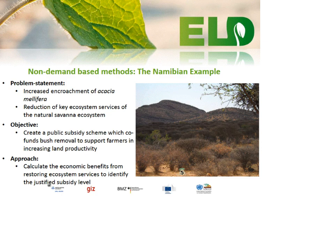The objective was to create a subsidized scheme, funded by the public sector, to support farmers in restoring ecosystem services — specifically cutting down the bushes and applying a sustainable rangeland management system to increase land productivity. However, cutting down thorny bushes is quite expensive, making the opportunity cost high. The approach was to calculate the economic benefits accruing to the governmental side — how much increased gains the government would receive — which could then be used to subsidize farmers who apply sustainable rangeland management. This was calculated over a period of 10 years to justify a long-term subsidy level.